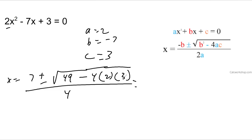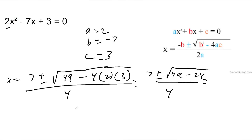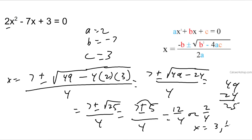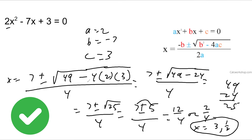Simplifying a little as I go: this gives me 7 plus or minus the square root of 49 minus 8 times 3 is 24, all over 4. So now: 7 plus or minus the square root of 49 minus 24, which is 25, all over 4. So 7 plus or minus 5 — because that's the square root of 25 — all over 4. Seven plus 5 is 12 over 4, or 7 minus 5 is 2 over 4. So x equals 3 and one half. If you plug those in, you'll get zero.